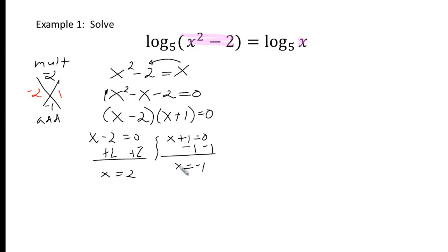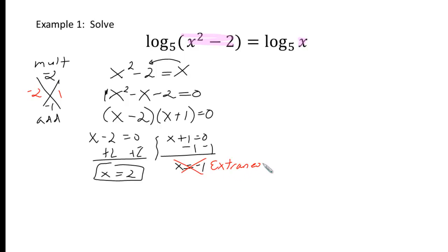Since it says (x minus 2)(x plus 1), we set each factor equal to 0 using the zero product property and solve. We now need to double check our answers and make sure they're not extraneous — meaning when we plug x in, it doesn't make any argument parts negative. When we plug in 2, we get positive values, so x equals 2 is okay. When we plug in negative 1, the argument part becomes negative, so that is extraneous. Only x equals 2 is the answer. You must always test for extraneous roots.